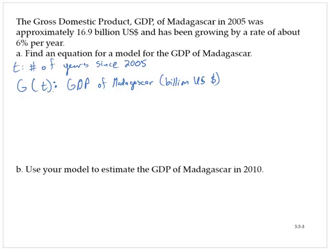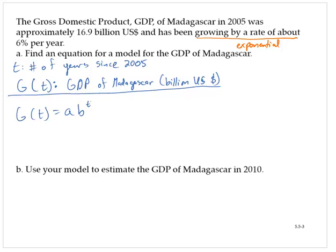Since we see that we've been growing by a rate, that tells me to use an exponential model, so I want to build something of the form g of t is equal to a times b to the t. Since we have an initial value — in 2005 it was approximately $16.9 billion — I know my a value is 16.9.